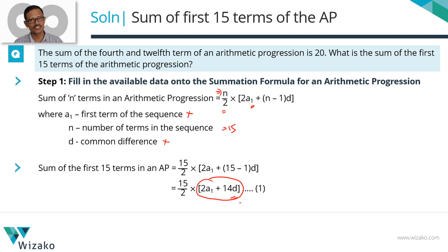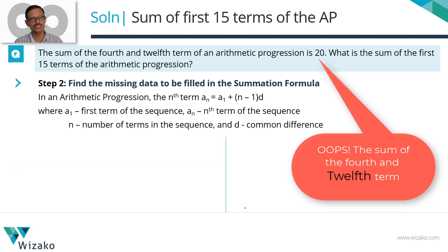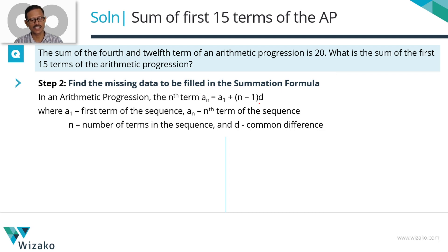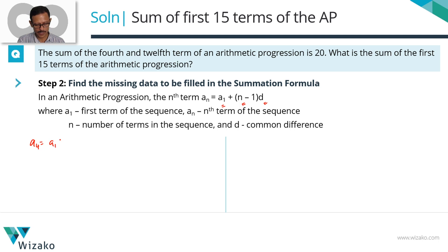The question gives us information about the sum of the fourth and the twelfth term. For any arithmetic progression, the nth term is given by A1 plus n minus 1 times d, where A1 is the first term, n is the number of terms, and d is the common difference. We'll express both A4 and A12 using this formula. A4 equals A1 plus 4 minus 1 times d, which is A1 plus 3d.